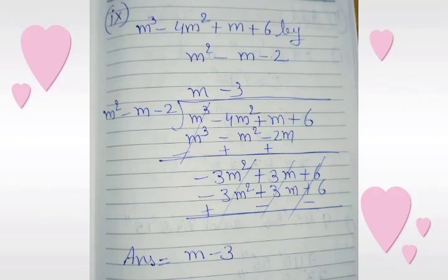Sub-part 9: m cubed minus 4m squared plus m plus 6 divided by m squared minus m minus 2. We multiply m squared minus m minus 2 with m and get m cubed minus m squared minus 2m. We change the sign of the last line — the first term is cancelled — and we get minus 3m squared plus 3m plus 6. We multiply by minus 3 and get minus 3m squared plus 3m plus 6. After changing the sign, all terms are cancelled and the final answer is m minus 3.